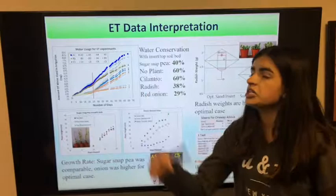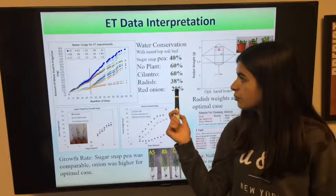With apple transpiration data interpretation, the water conserved for different samples were from 29% to 60%, and the radish weights were higher for the optimal case.